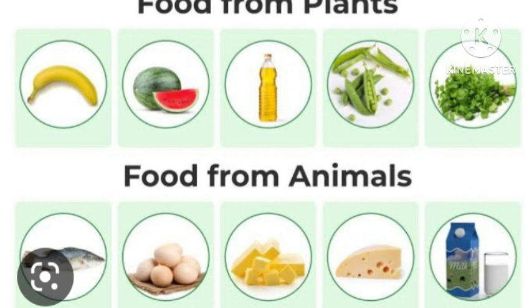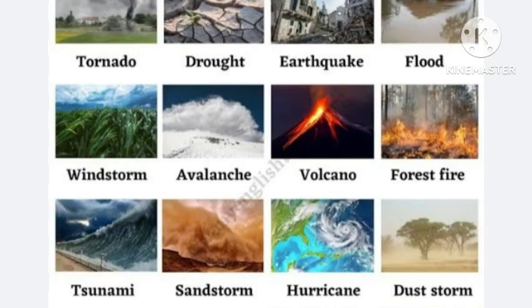Your next topic is food from plants and animals. You have to collect information about what types of food we get from plants and what types of food we get from animals. Your next topic is natural climates — you have to write the reasons why people face certain natural climate events.